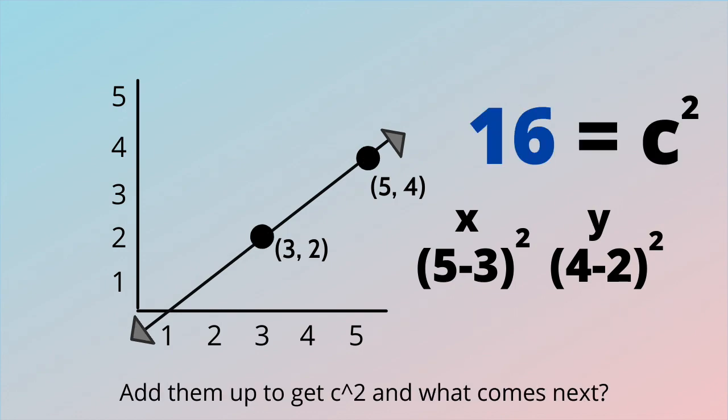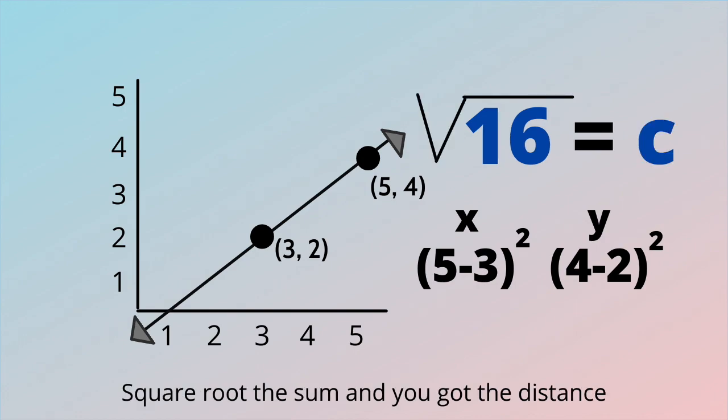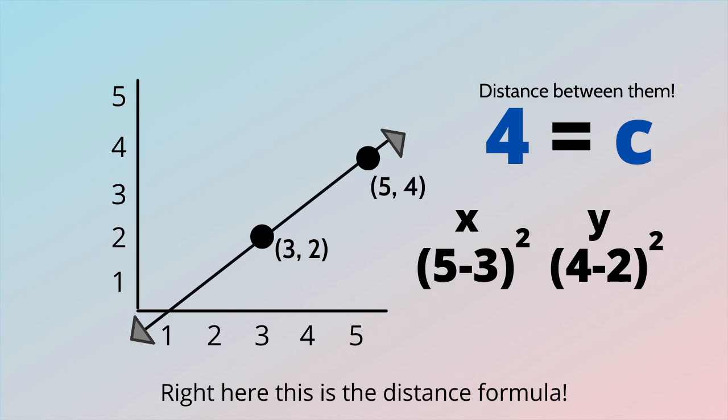Add them up to get c squared, what comes next? Square root the sum and you've got the distance, right here this is the distance formula.